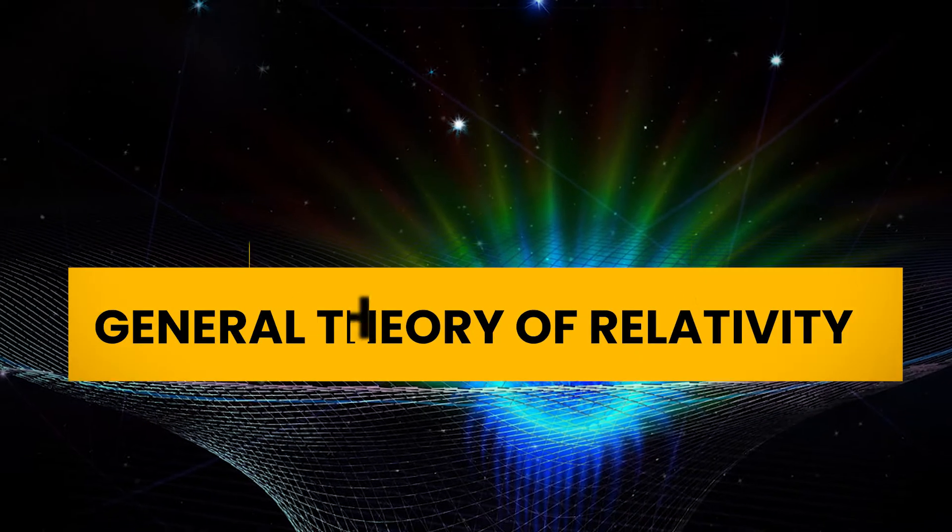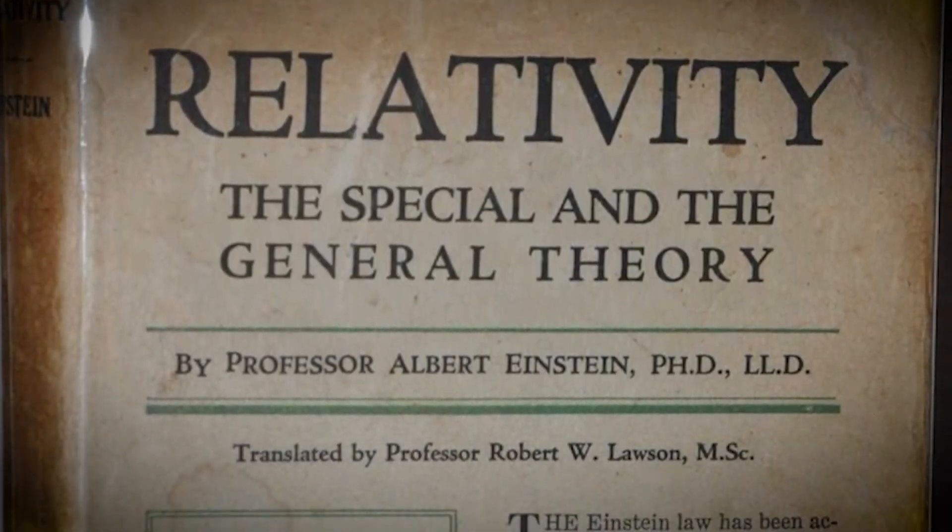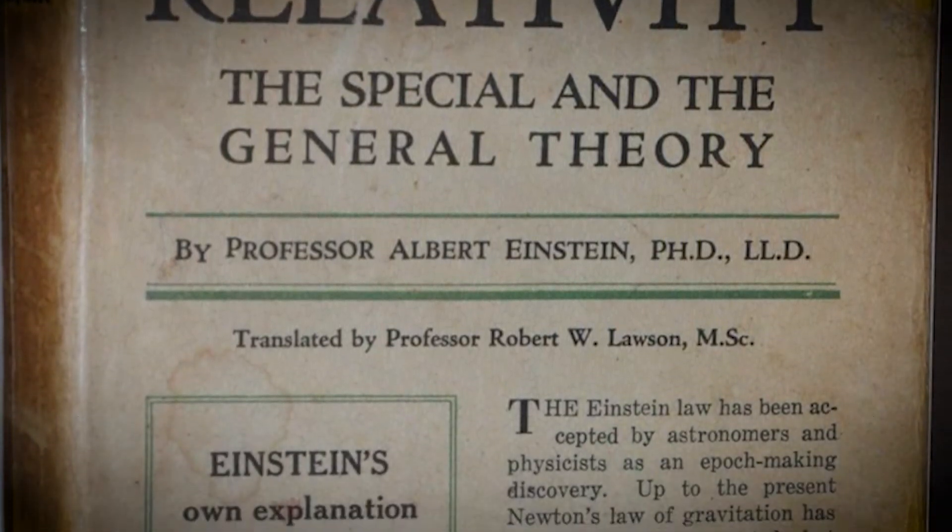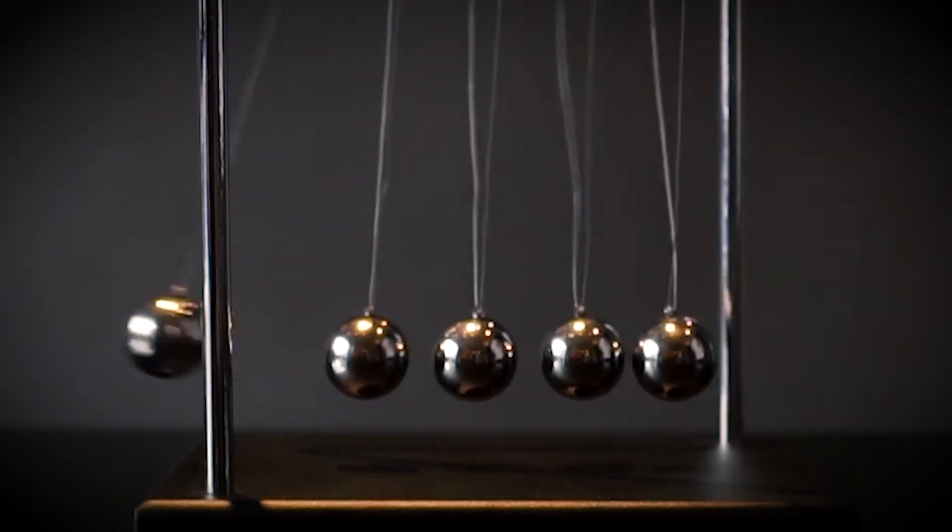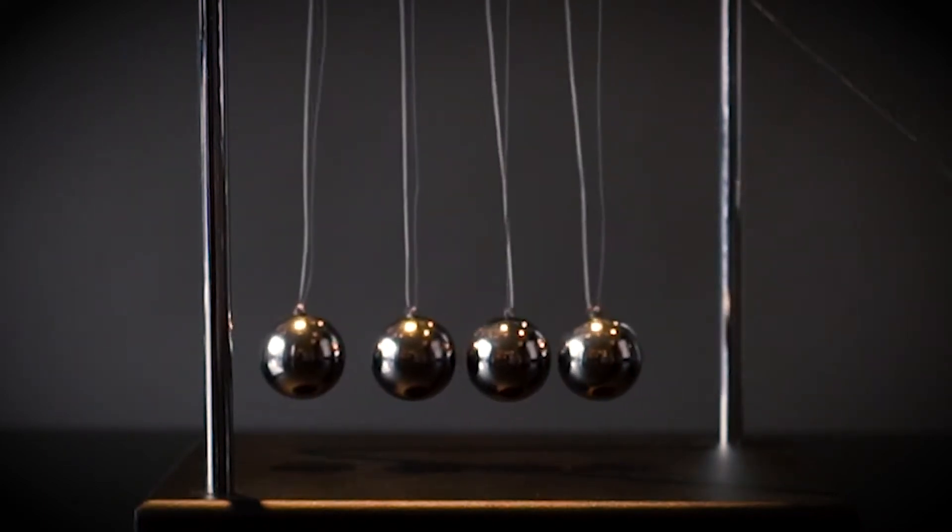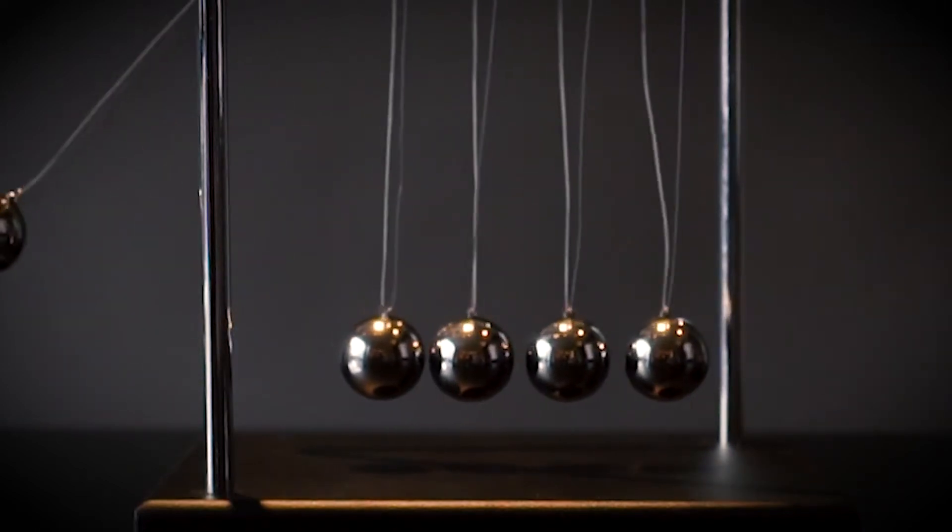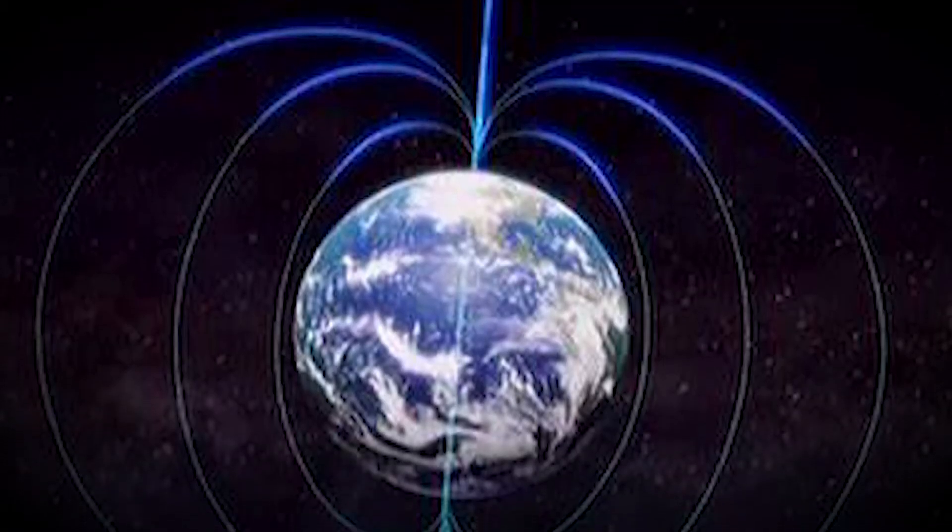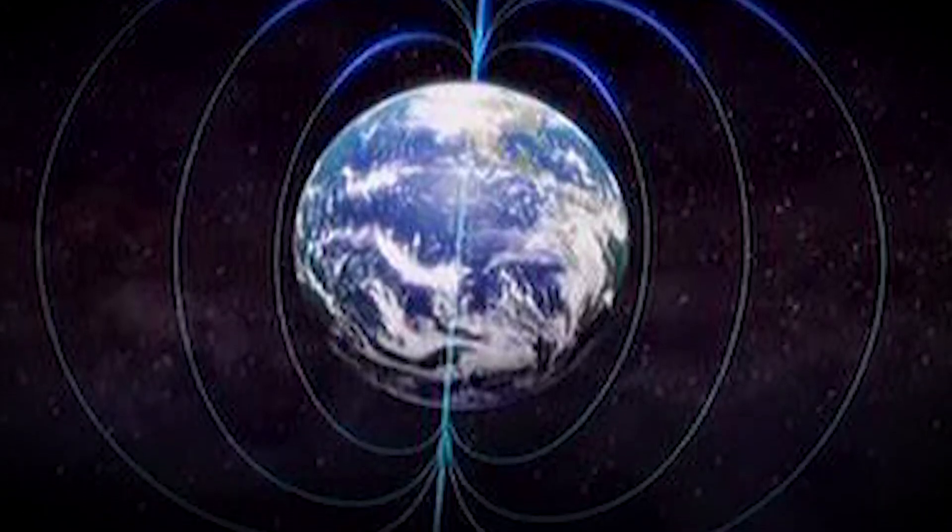Fifth is general theory of relativity. In 1916, Einstein published his general theory of relativity. This paper generalizes the concepts of special relativity and Newton's law of universal gravitation, describing gravity as a property of space and time. This theory has aided our understanding of how the large-scale structure of the universe is set up.